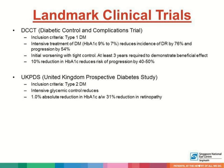The DCCT trial included patients with type 1 diabetes and showed that intensive treatment of diabetes, with HbA1c reduction from 9% to 7%, reduced the incidence of diabetic retinopathy. It also showed that there was an initial worsening with tight control, and three years of tight control was required before it demonstrated a beneficial effect. A 10% reduction in HbA1c reduced risk of progression by 40% to 50%.